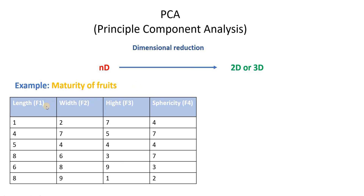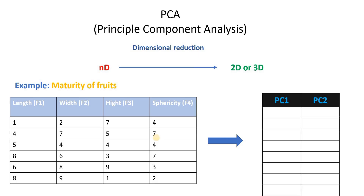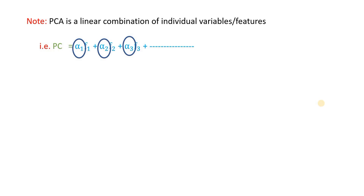Let's take one example of what PCA does. Say we have maturity of fruits which depends upon length, width, height, and sphericity — so we have four features. PCA reduces the dimension from 4 to 2, giving us Principal Component 1 and Principal Component 2. It is sometimes misinterpreted that PCA eliminates features — it does not. It is just a linear combination of the individual variables, or features.